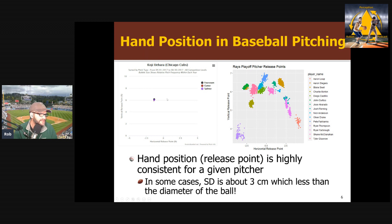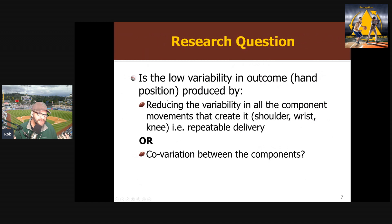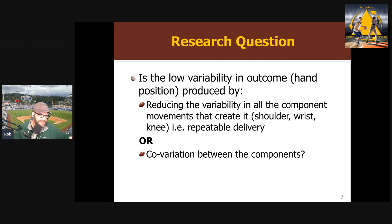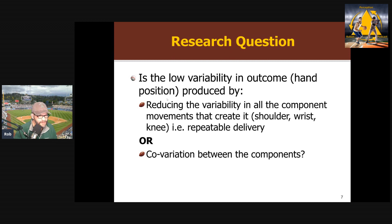So that's what we want to try to explain: how do we get this outcome consistency? The question is whether this low variability in hand position is produced by reducing the variability in all the component movements — getting knee position, hip angle, shoulder angle, wrist angle, elbow angle as consistent as possible on every pitch — or through co-variation of the components. We're not trying to get them all as low as possible independently; we want some variability from trial to trial because they're going to have to work together.